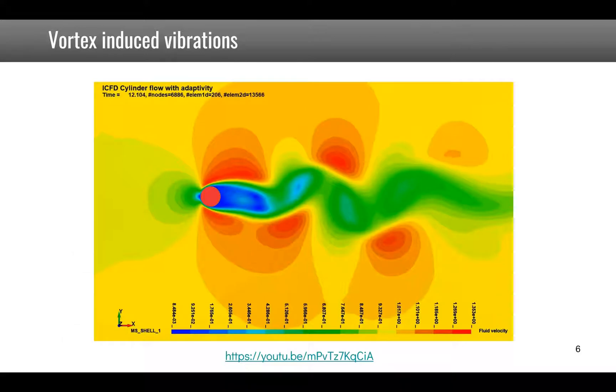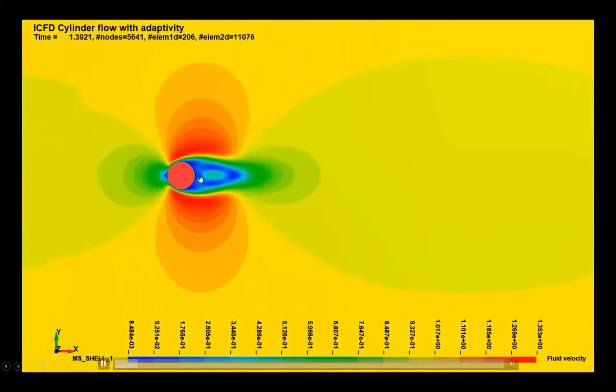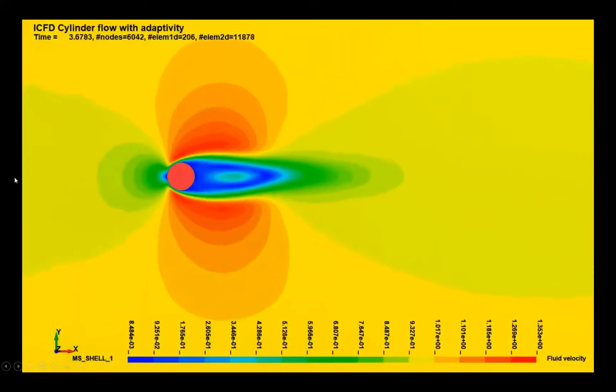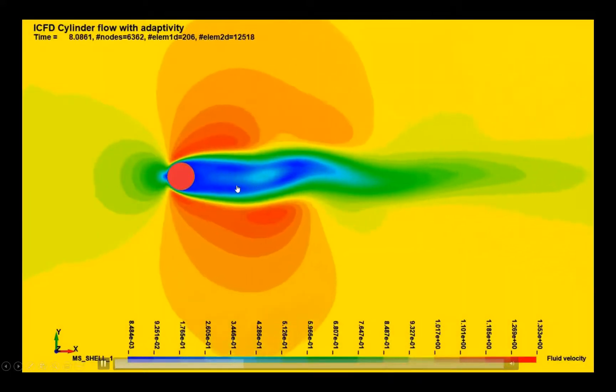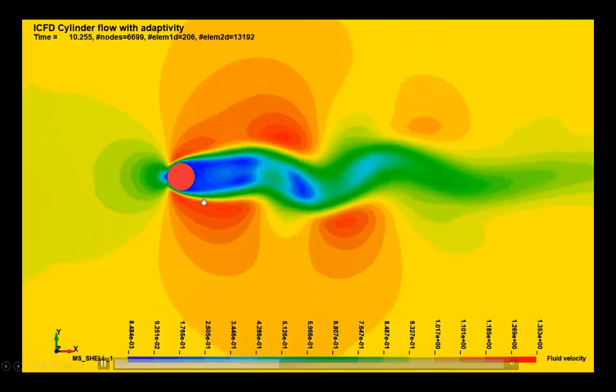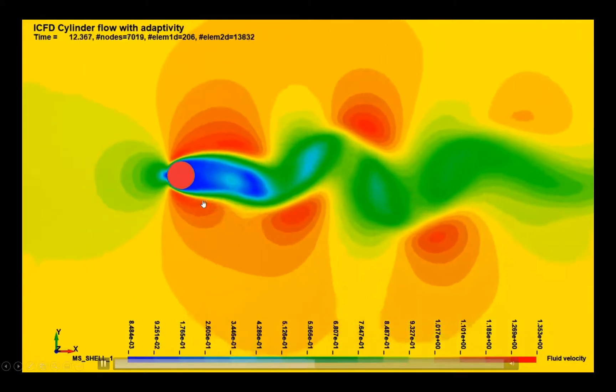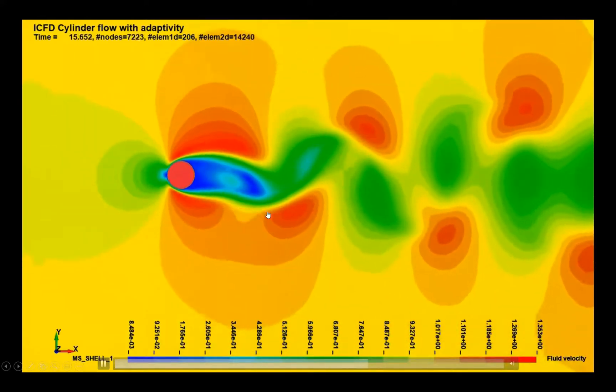To understand vortex induced vibrations we can have a look at this first numerical simulation where you see that a cylinder is placed in a constant flow in that direction. And you see the formation of these alternating vortices behind the cylinder which have a certain frequency.